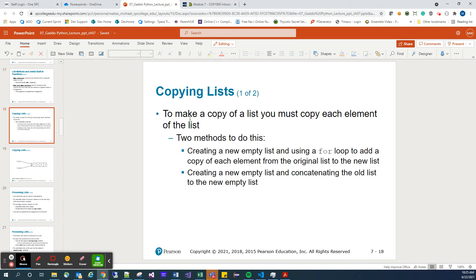When it comes to copying lists, you can make a copy of a list. You must copy each element of the list. Two methods to do this. You can create a new list, and then loop through the old list, copying each element into the new list. You can also create a new empty list and concatenate the old list to the new empty list. Now, understand that the way it works is you have to make sure your new list is empty. So that way, when you concatenate, you're only adding all the elements to the end of an empty list, thus giving us our new list.